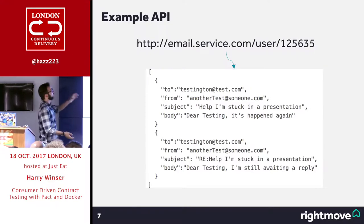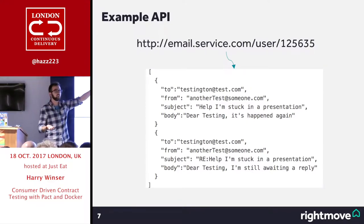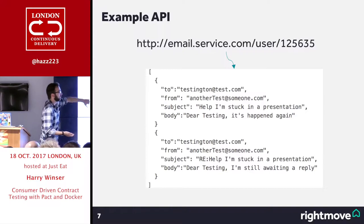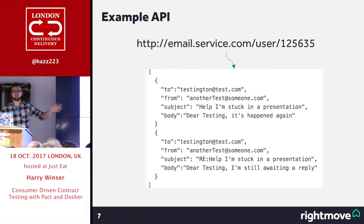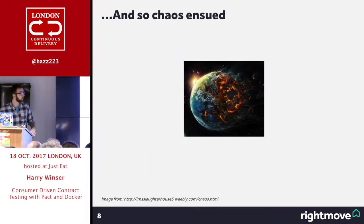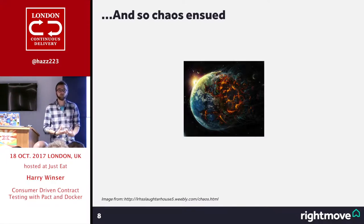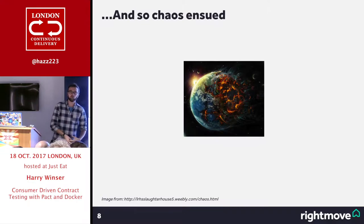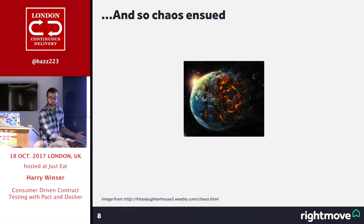You've got a very nice example API where you call email.service.com/user with a particular ID and it returns all the messages associated with that user. When you've got all this going on across multiple services, chaos ensues. You've got all your services being rolled out, a whole load of different things happening all at once across different teams, across different parts of the planet.